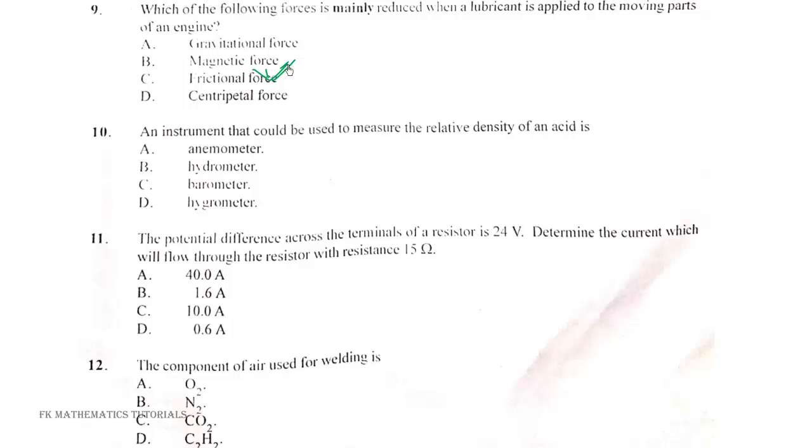Question 10. An instrument that could be used to measure the relative density of a liquid is hydrometer. The anemometer measures direction and speed of wind, barometer measures pressure, and hygrometer measures humidity of air or liquid.